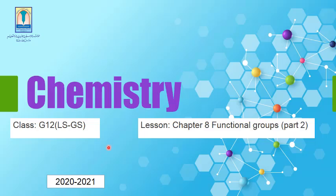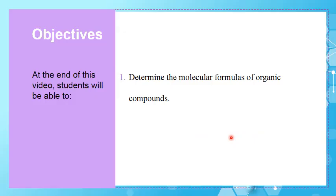As-salamu alaykum, it's Vivian Shouaikani. I'll be explaining Chapter 8, Functional Groups, Part 2. Let's start with the single objective we have to cover in this chapter, which is to determine the molecular formulas of organic compounds.